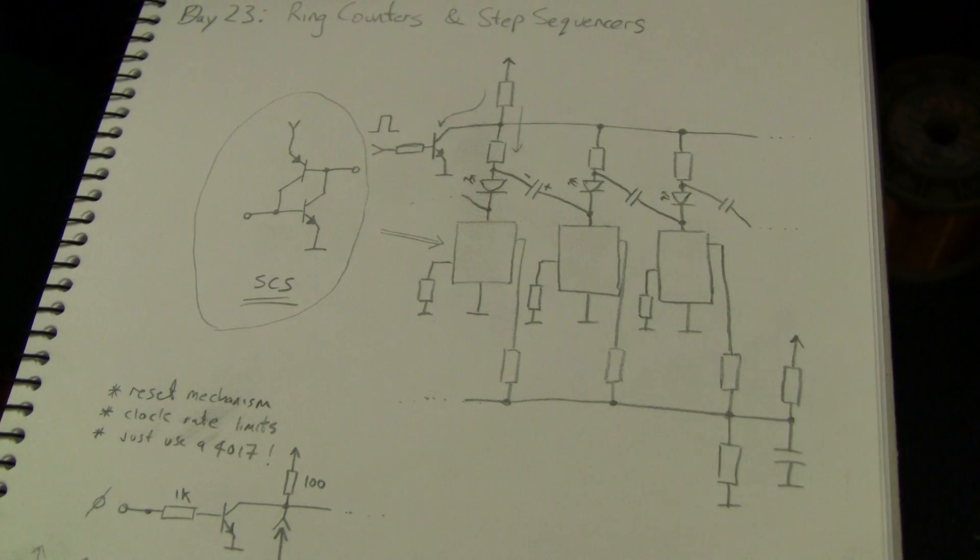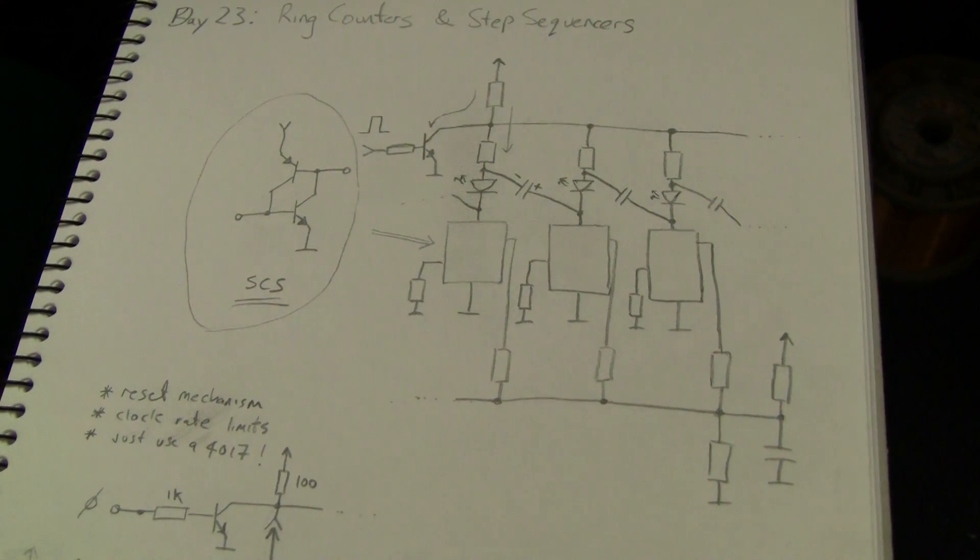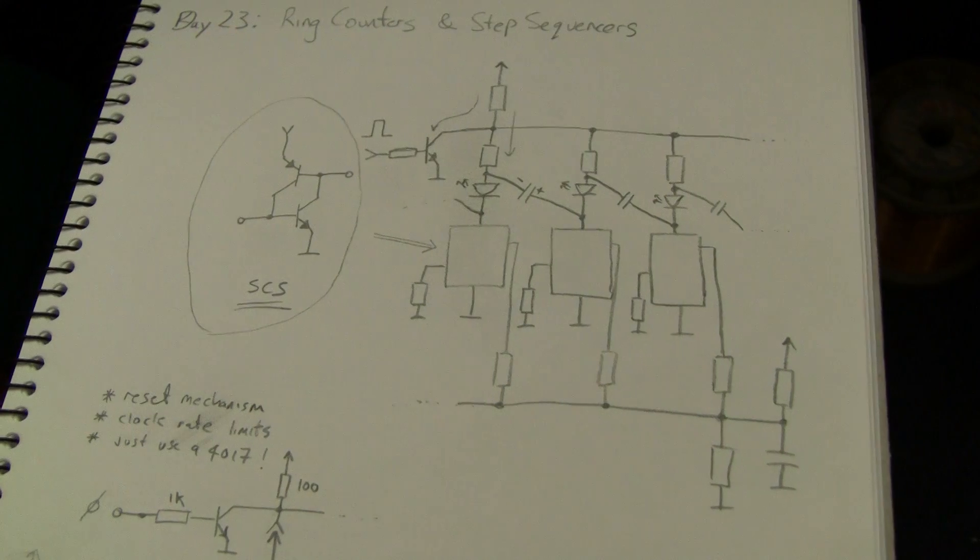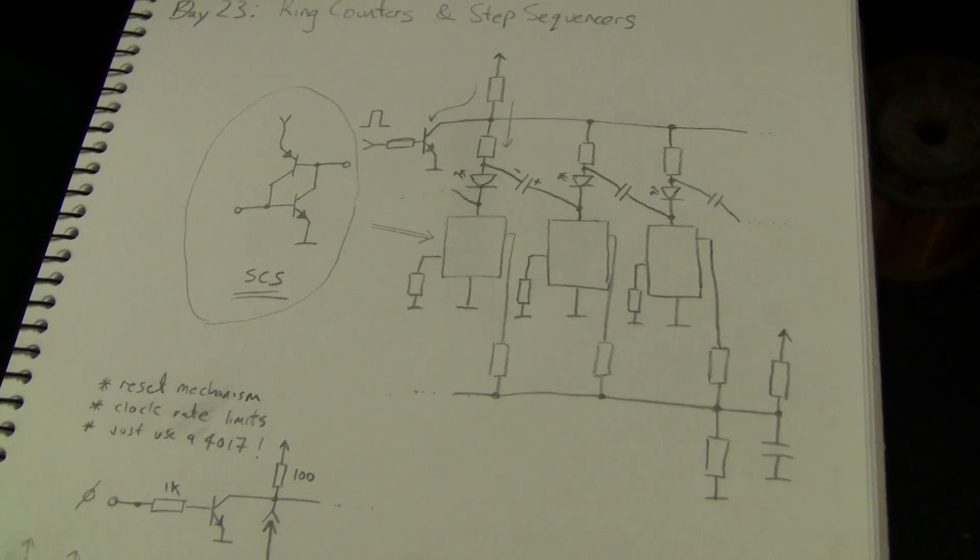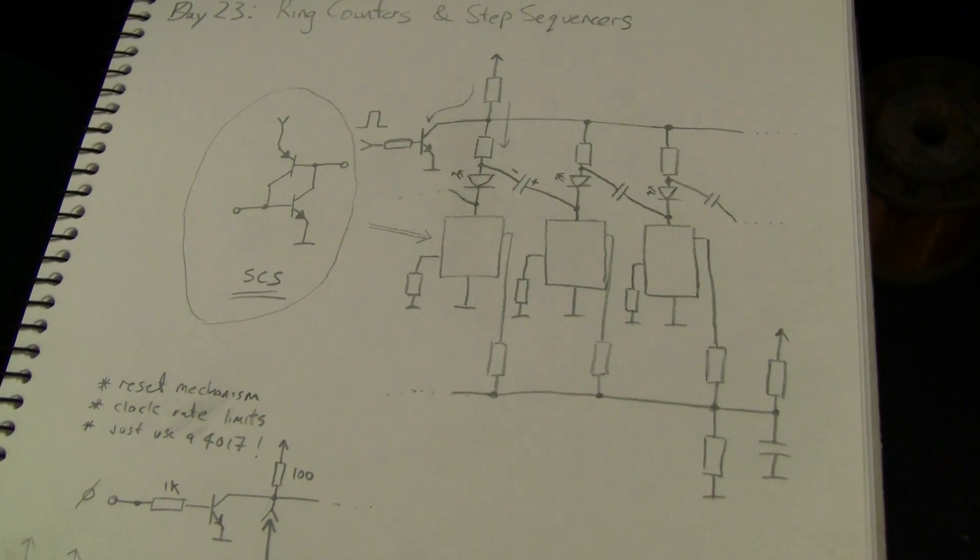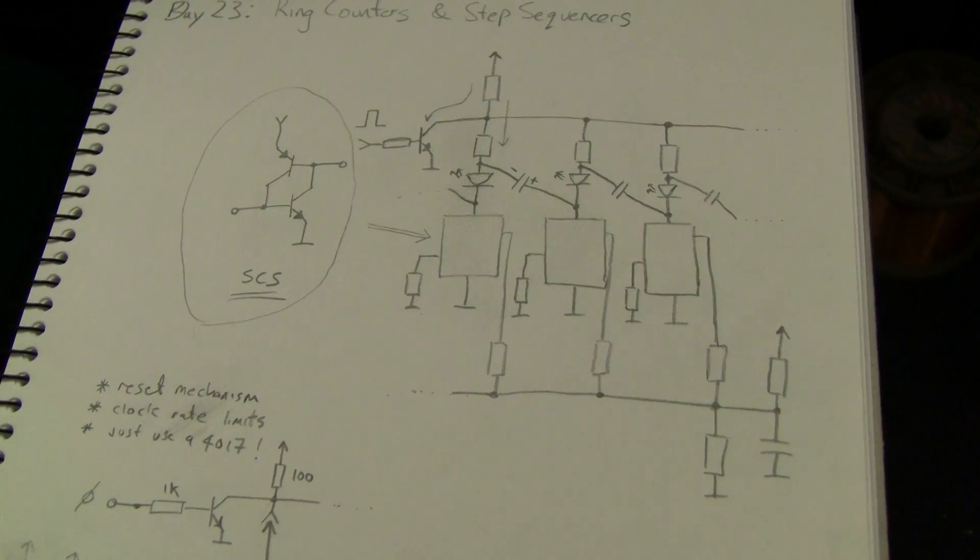And then there'd be a current steered out of each of the monostables into a current controlled oscillator of some description to actually produce the tone. Very simple to build—it's like two or three transistors per cell and then another couple of transistors for the oscillator.